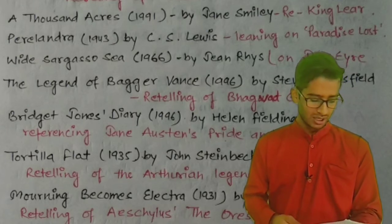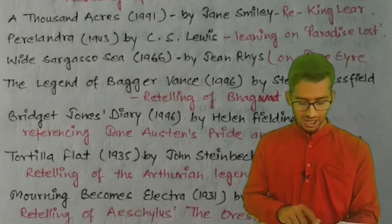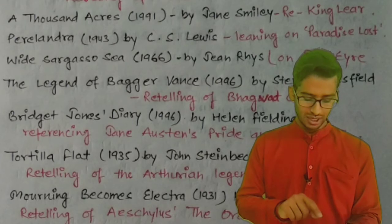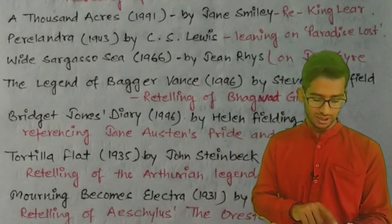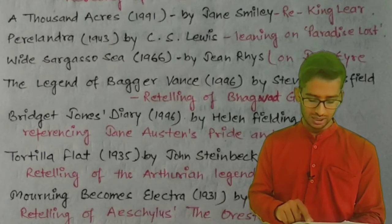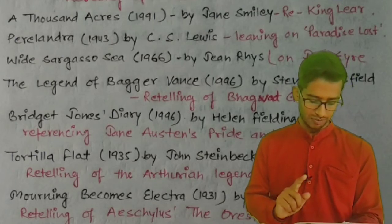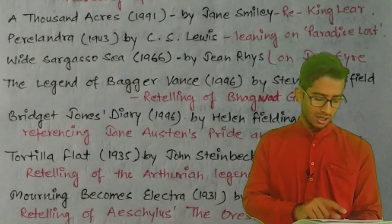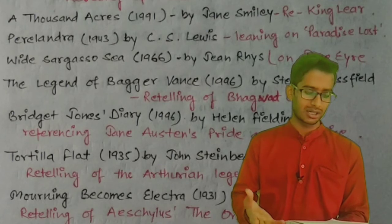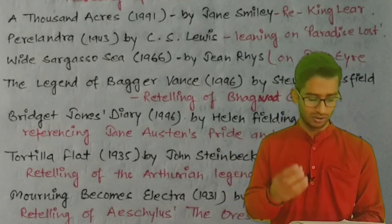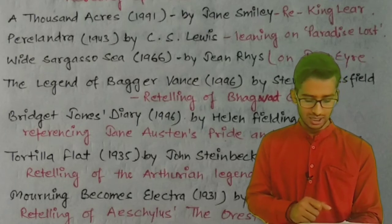'The Legend of Bagger Vance' (1995) by Steven Pressfield, which is a retelling of the Bhagavad Gita. 'Bridget Jones's Diary' (1996) by Helen Fielding, which references Jane Austen's 'Pride and Prejudice'. That is why it is considered an example of intertextuality.